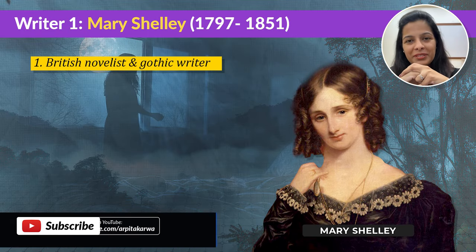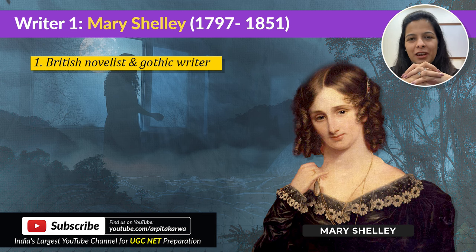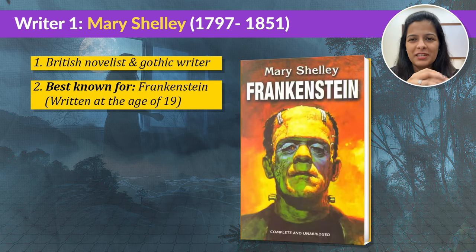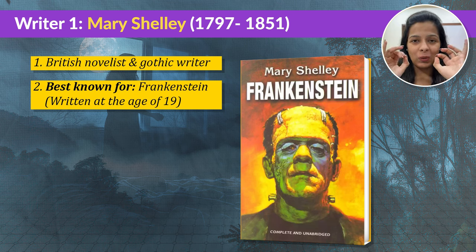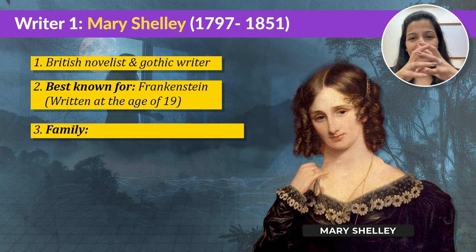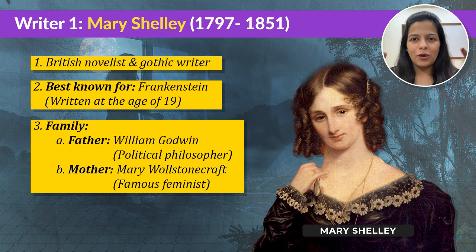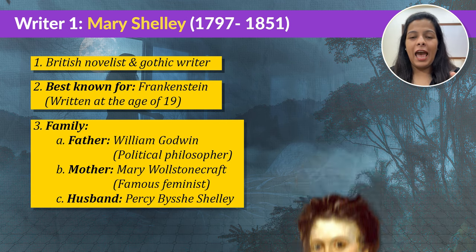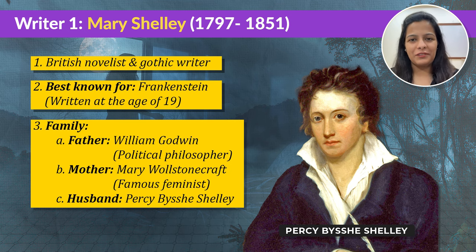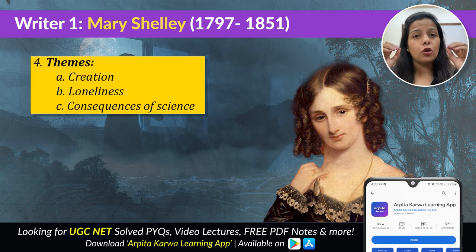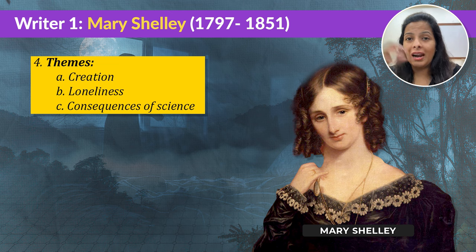Our first writer is Mary Shelley, a name every Gothic fiction lover would know. She was a British novelist and Gothic fiction writer, best known for her novel Frankenstein, which she wrote when she was just 19 years old. Mary Shelley was born into a remarkable family — her father William Godwin was a political philosopher, her mother Mary Wollstonecraft was the famous feminist, and she married P.B. Shelley. In all her works, she explores themes like creation, loneliness, and the consequences of science — themes still relevant today.